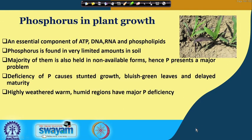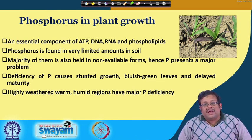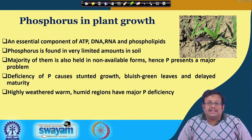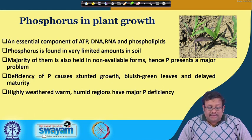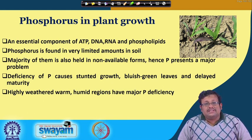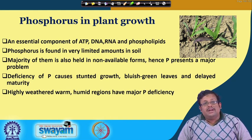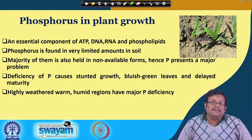Phosphorus is very important for plant growth because it is an essential component of ATP, DNA, RNA, and phospholipids. Phosphorus is found in very limited amounts in soil, and there are several problems with phosphorus. The majority of phosphorus in soil is also held in non-available forms.